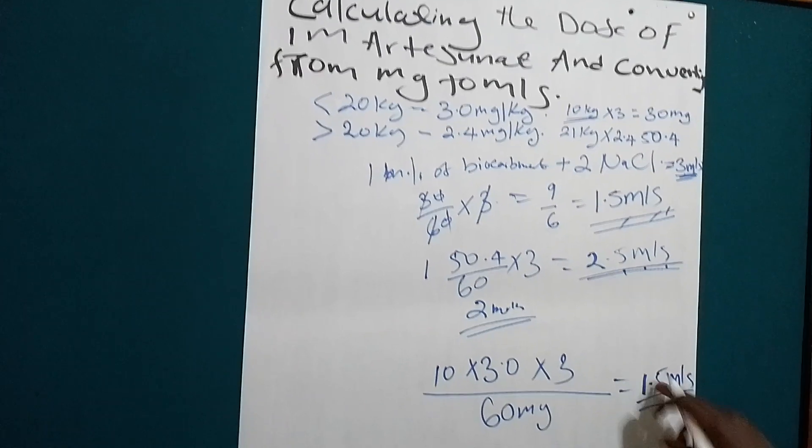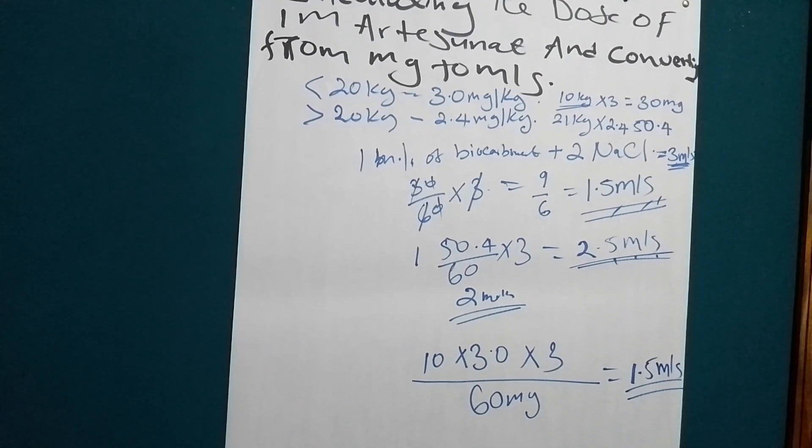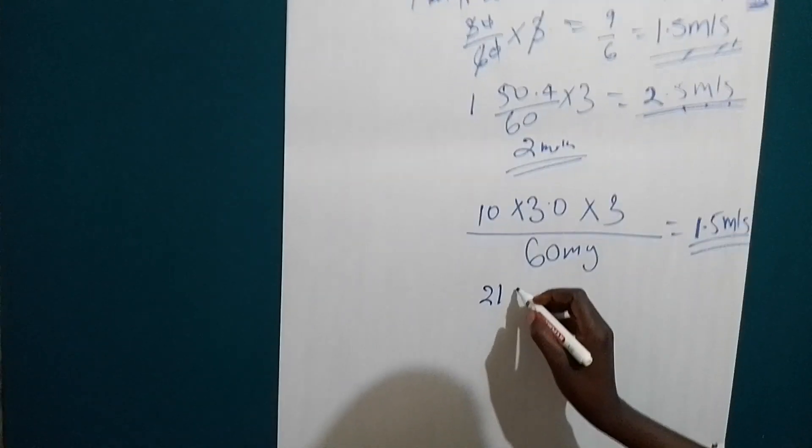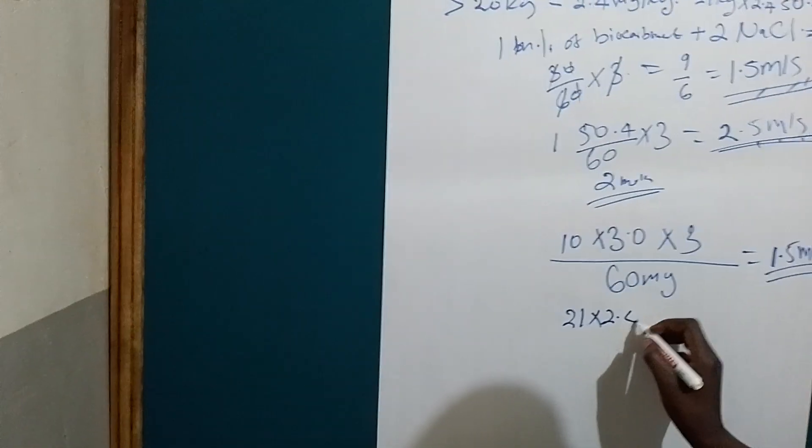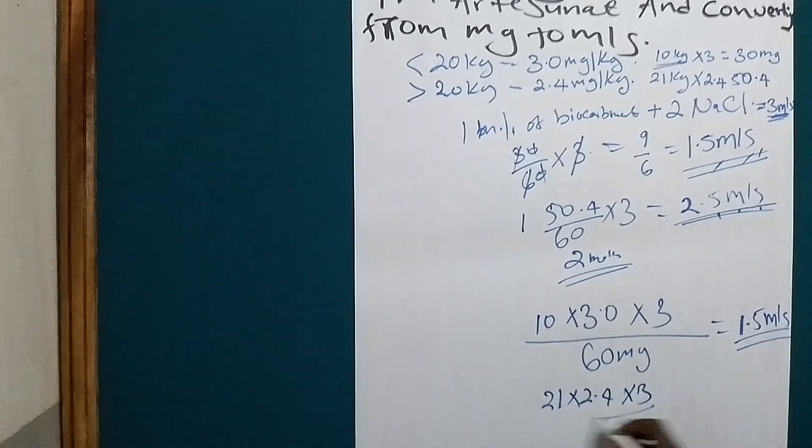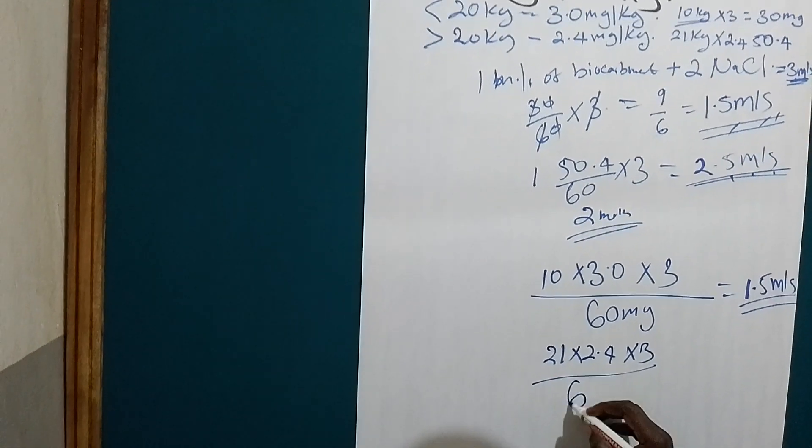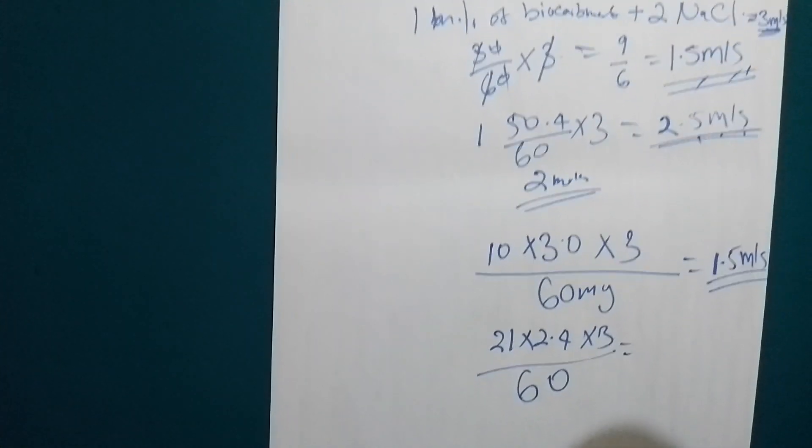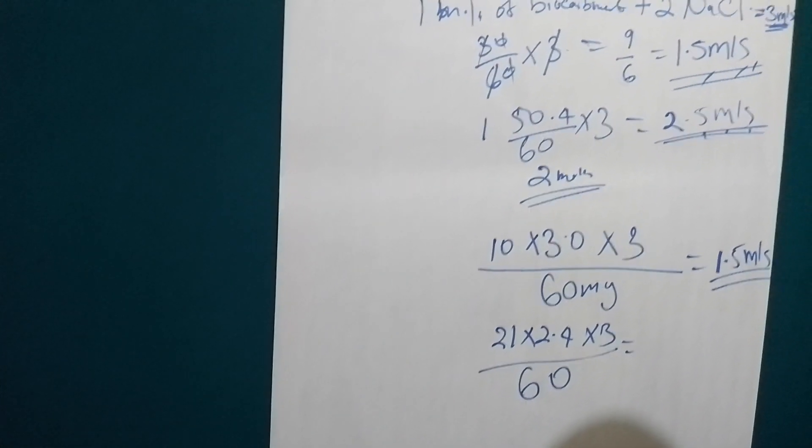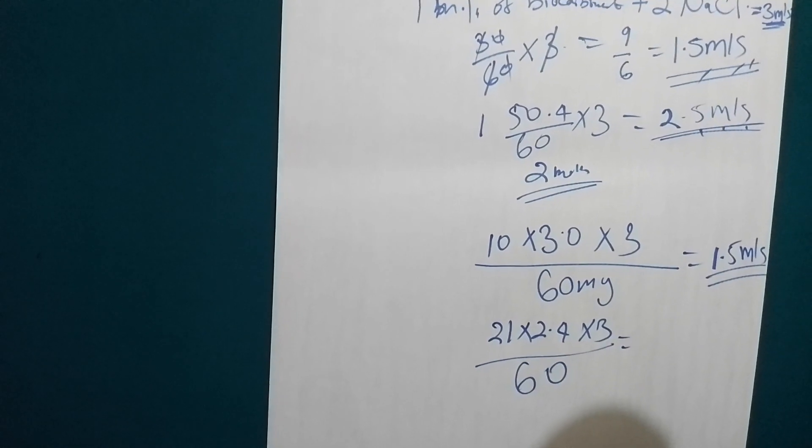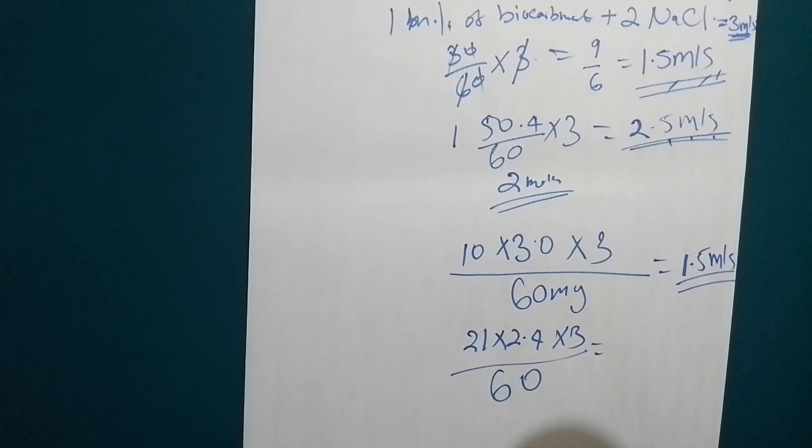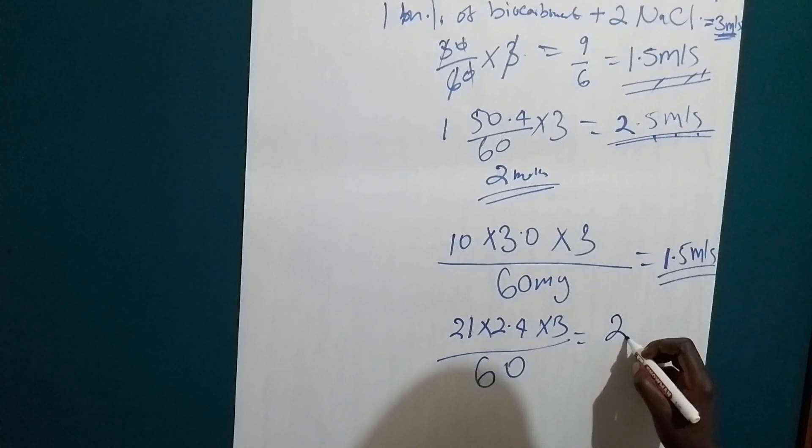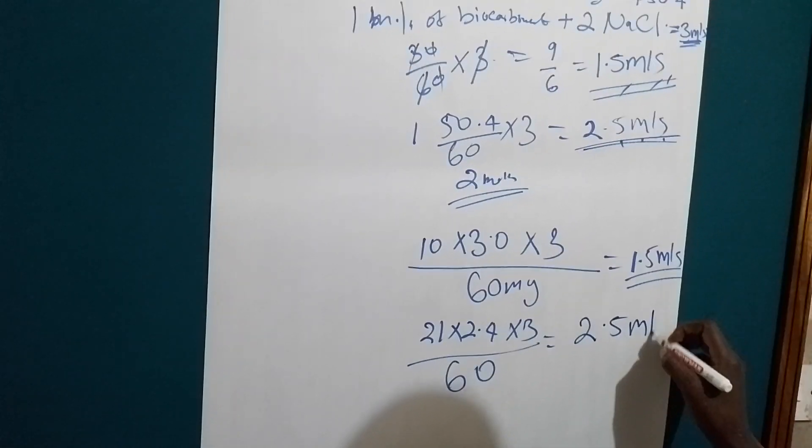So see, it is the same. Let's go for the second one: 21 times 2.4 times 3 divided by 60. This is 2.5 milliliters.